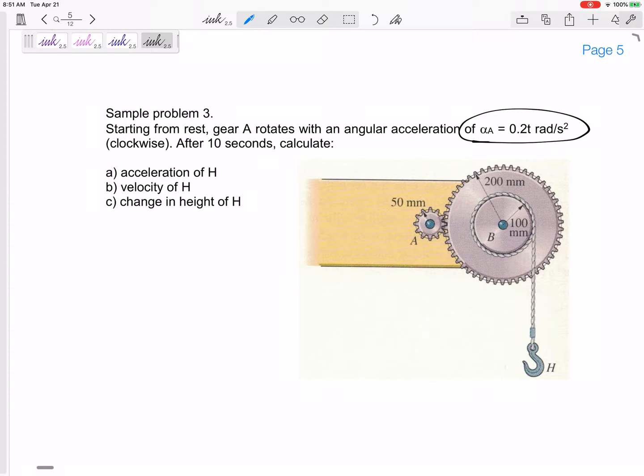So make sure you know all those derivatives and integrals, or you don't have to know them—they're on your formula sheet—but know when to use them or when you can use constant acceleration equations. Here we go: starting from rest, gear A rotates with an angular acceleration of α = 0.2t rad/s² (clockwise). After 10 seconds, calculate everything that's happening at H.